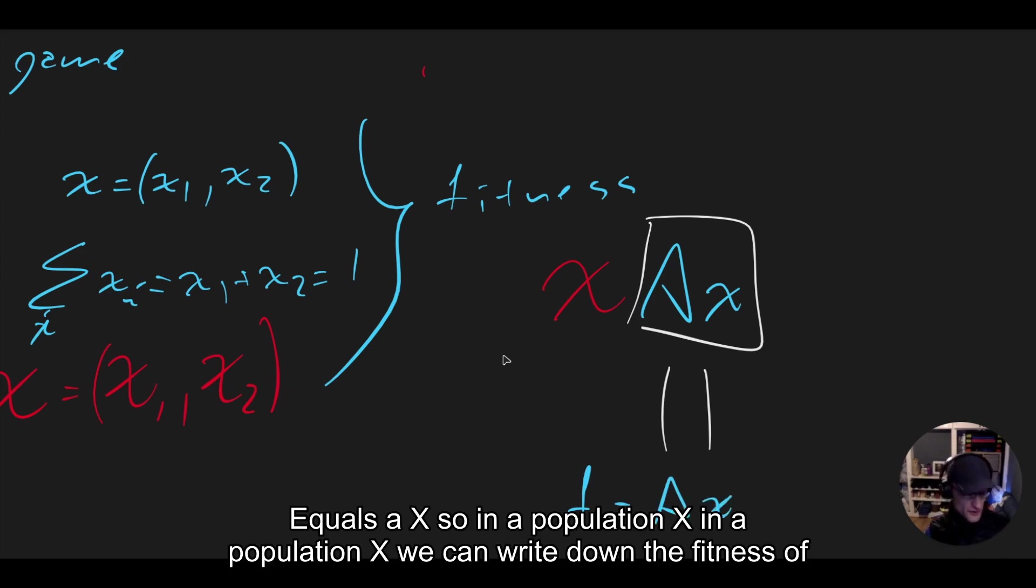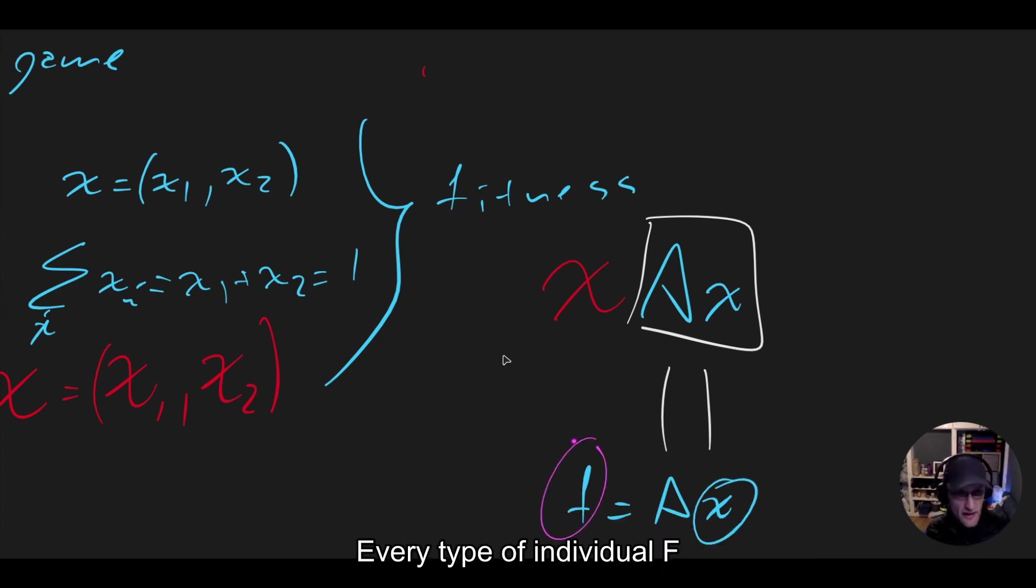So in a population X, we can write down the fitness of every type of individual F.